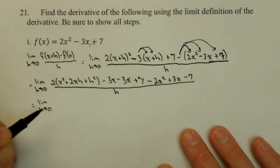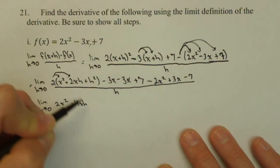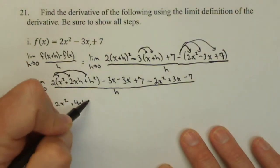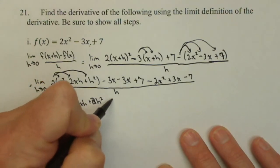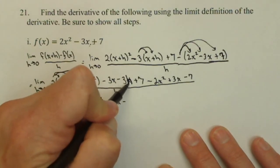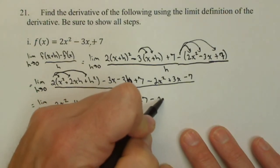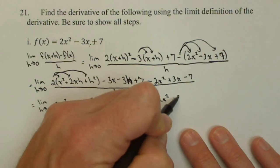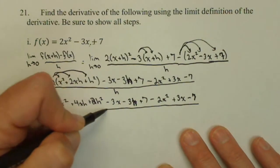Limit as h goes to 0 of 2x squared plus 4xh plus 2h squared minus 3x minus 3h plus 7 minus 2x squared plus 3x minus 7. A heck of a lot of writing.